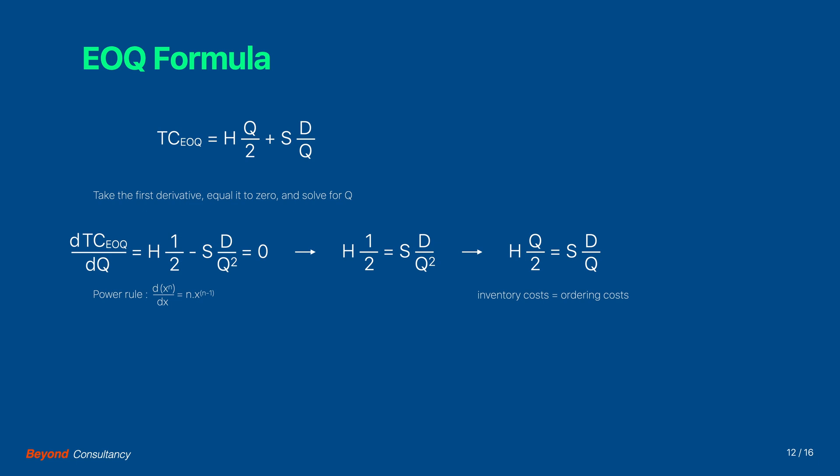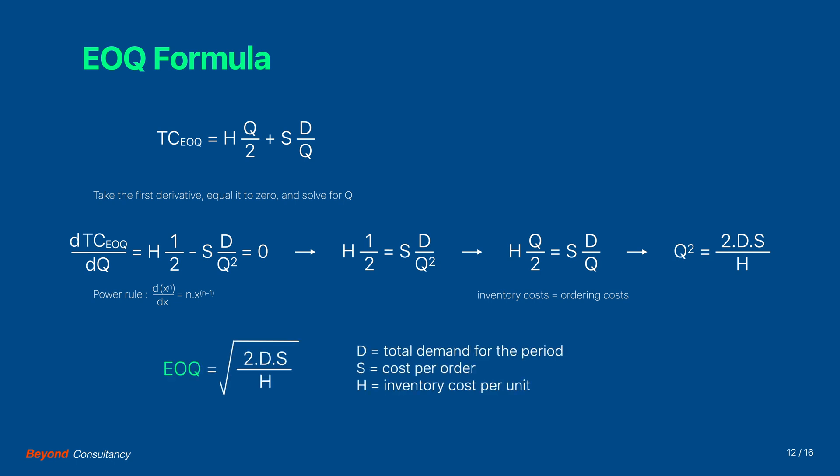We will remember this for future analysis. Let us now multiply both terms again with Q, move H and 2 to the other side of the equal sign. When taking the square root, we at last arrive at the formula for the economic order quantity.